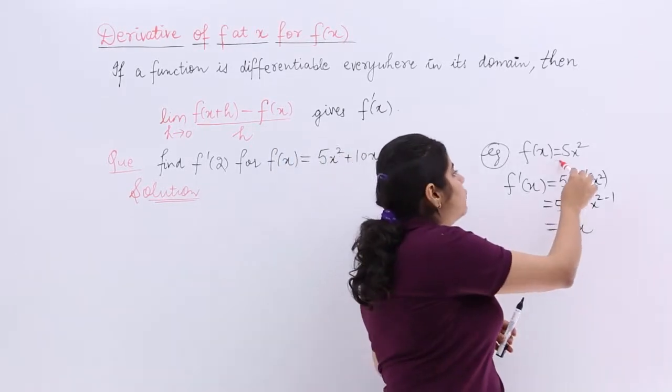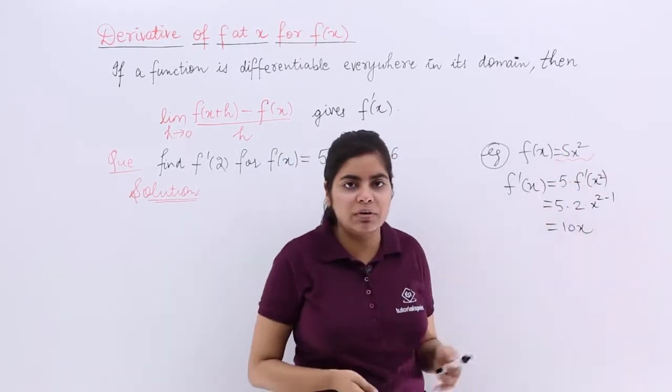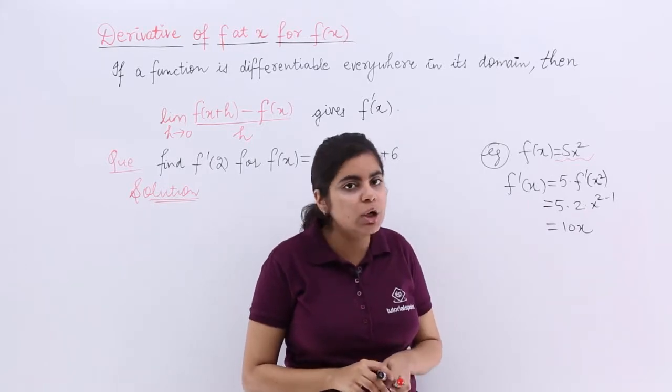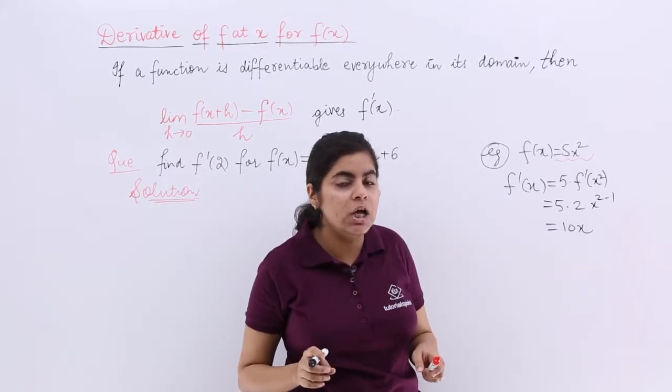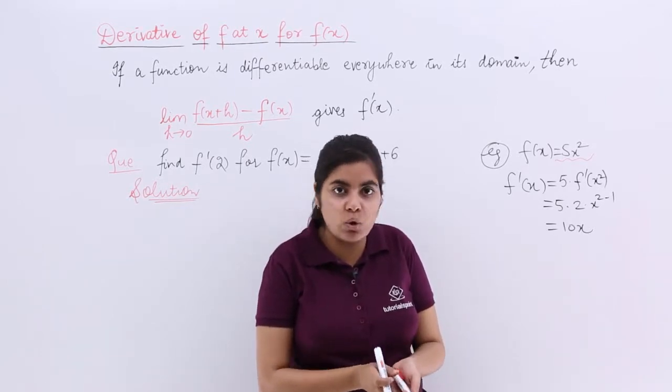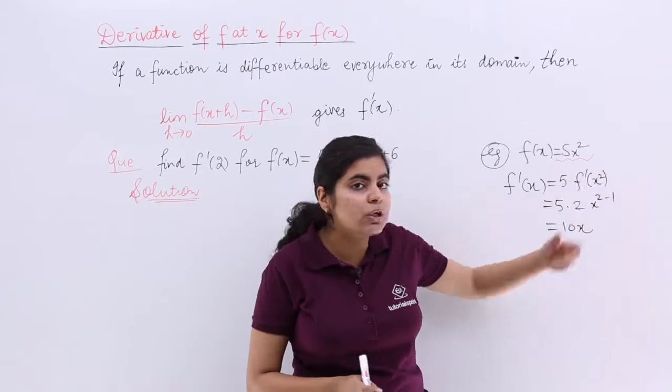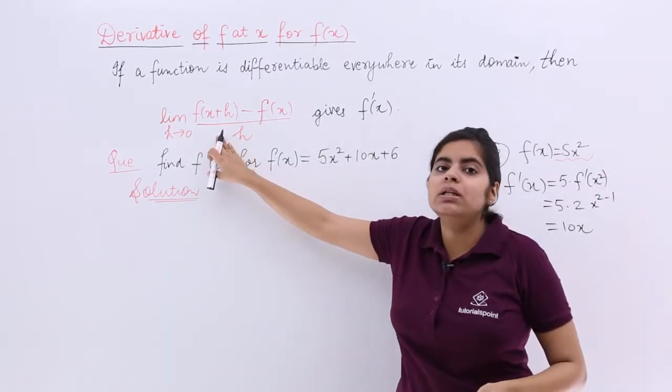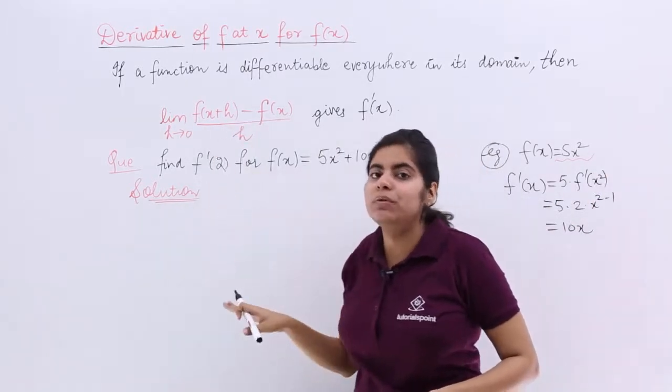If you remember the formula definitely this is quick. But this kind of a function 5x square is a polynomial function. Polynomial function has the property that it is continuous and differentiable in its domain. So that means you can always go about by even using this formula.